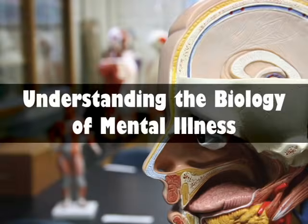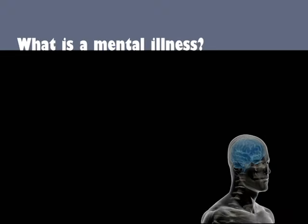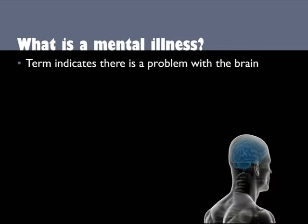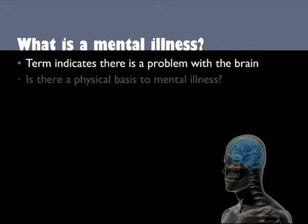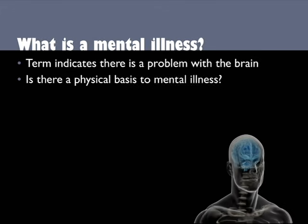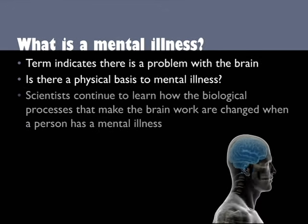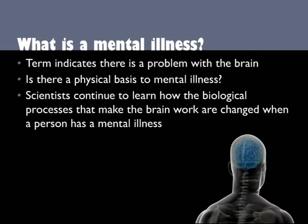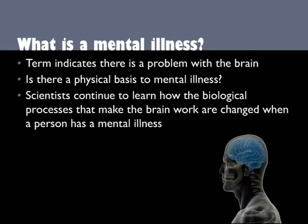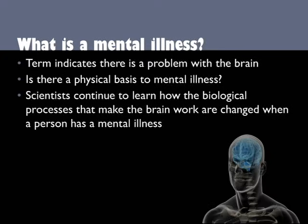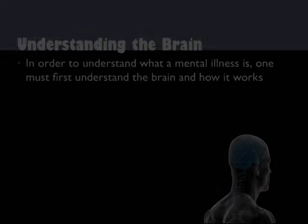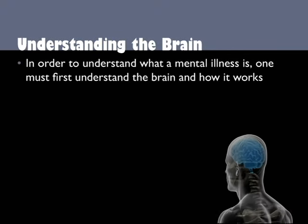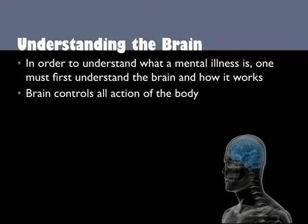What exactly is a mental illness? The term clearly indicates that there is a problem with the brain. But is it just the brain in an abstract sense, or is there a physical basis to mental illness? As scientists continue to investigate mental illnesses and their causes, they learn more about how the biological processes that make the brain work are changed when a person has mental illness. In order to understand what a mental illness is, one must first understand the brain and how it works.